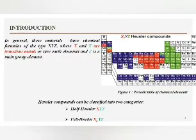In general, these materials have a chemical formula of the type XYZ, as shown in the periodic table presented in Figure 1, where X and Y are transition metals or rare-earth elements, and Z is the main group elements. Heusler compounds can be classified into two main categories: half-Heusler with the formula XYZ and full-Heusler with the formula X2YZ.